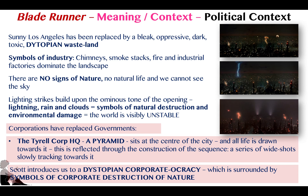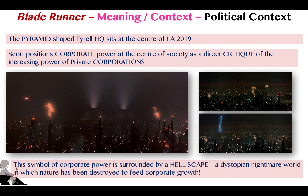The Tyrell building is shaped like a pyramid, which has certain connotations — hierarchy, power. It is a corporate symbol sitting at the very center of LA 2019. Interestingly, the camera slowly draws in towards it, almost suggesting that these corporations have so much power that even the camera itself is affected — it starts to affect even outside the diegesis. A great phrase to describe this is 'corporate-ocracy' — a term meaning a society has been taken over by a corporation that runs society.